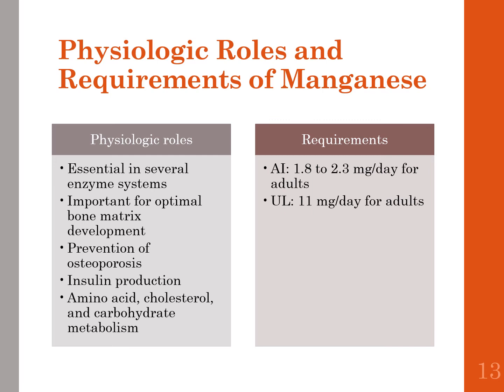Moving on to manganese — as we continue through this chapter, you'll notice minerals have less information since they are less studied. Manganese is essential in several enzyme systems, important for optimal bone matrix development and prevention of osteoporosis, aids in insulin production, and is part of amino acid, cholesterol, and carbohydrate metabolism. Manganese is absorbed in the liver and excreted in bile.